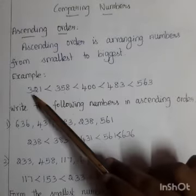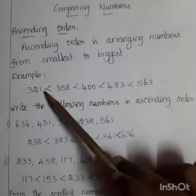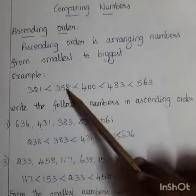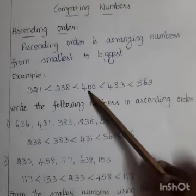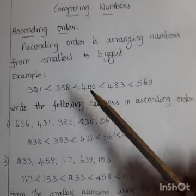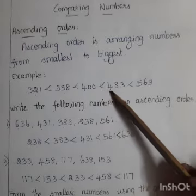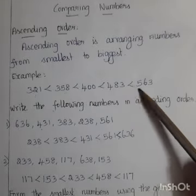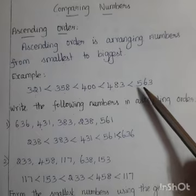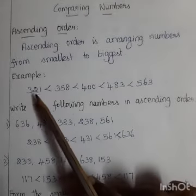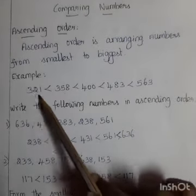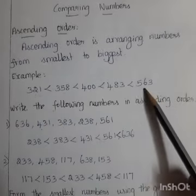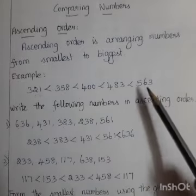Example: 321 is smaller than 358, smaller than 400, smaller than 483, smaller than 563. 321 is the smallest number. 563 is the biggest number.